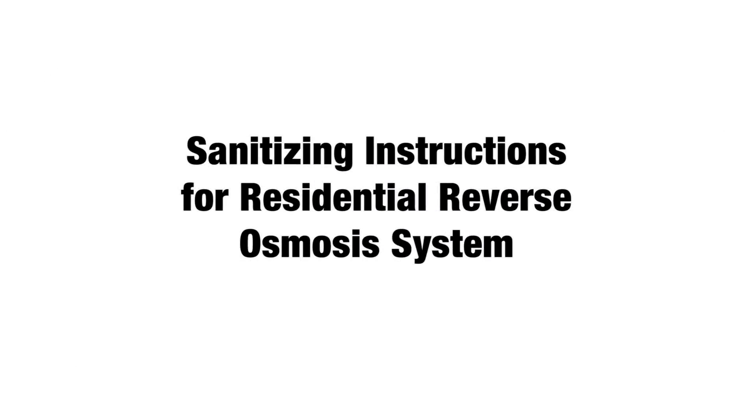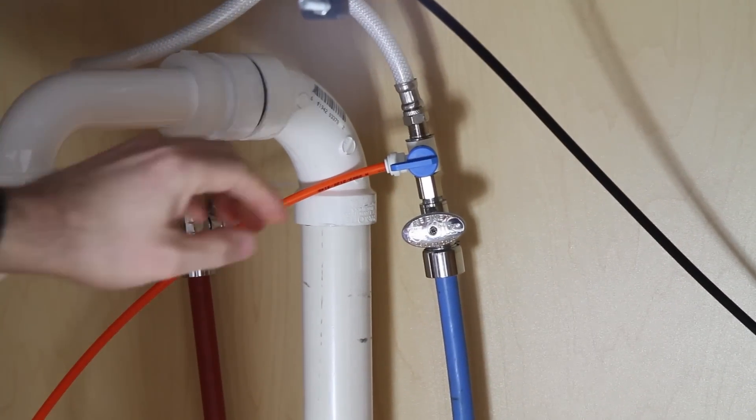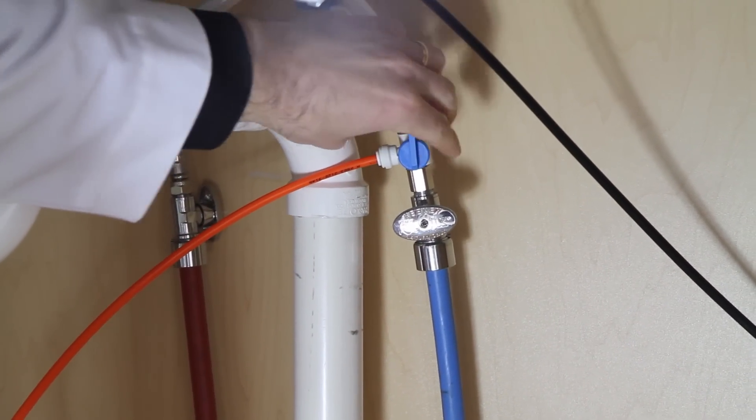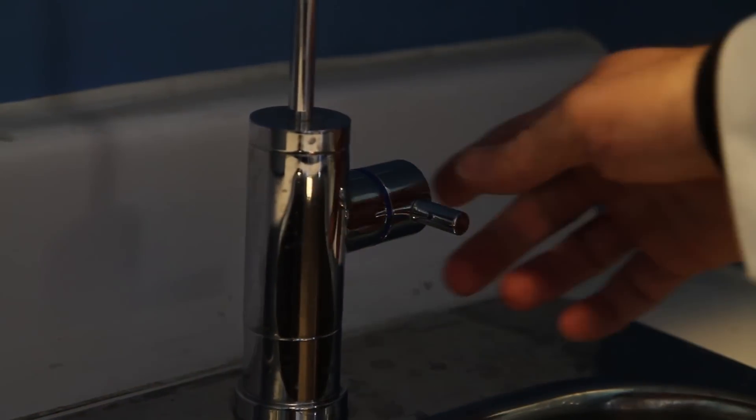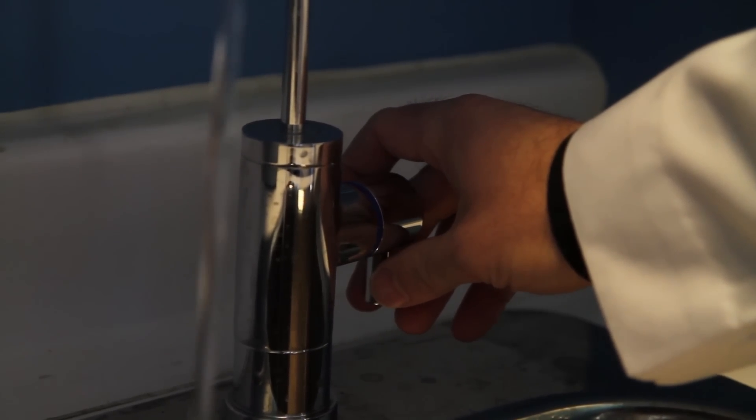Sanitizing instructions for reverse osmosis. You're going to shut off your water supply to your RO unit. You're going to open your water faucet and depressurize your system, which will be letting your tank drain completely.